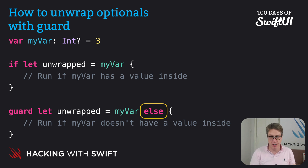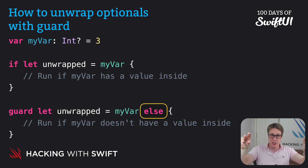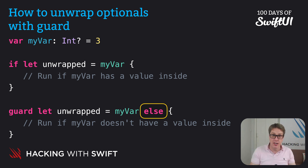To exit from the current function, for example. This is sometimes called an early return. We check that all our function's inputs are valid — what we expect them to be — as soon as the function starts. And if any aren't valid, we run some code and exit straight away. On the other hand, if all our checks pass, our function carries on exactly as intended — what's often called the happy path.